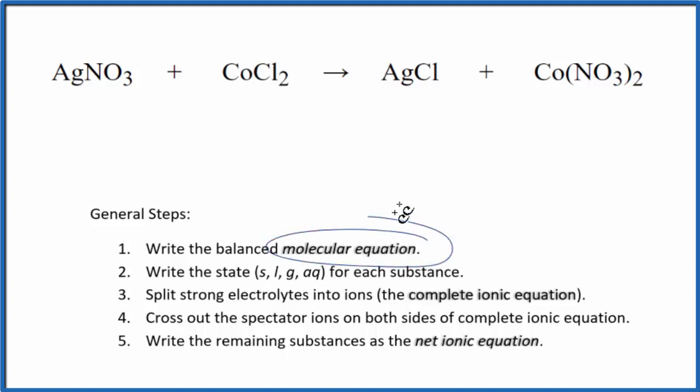First thing we need to do is balance our molecular equation. We have two nitrate ions here and only one here. So I could put a 2 in front of my AgNO3. That would balance the nitrates, but now I have two silvers. Let's put a 2 here. Those are balanced. The chlorines are balanced. Cobalt. Everything's good. So this is the balanced molecular equation.